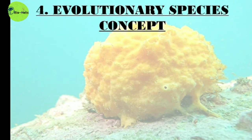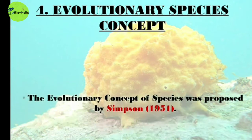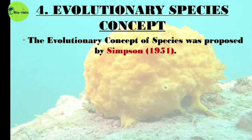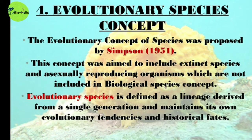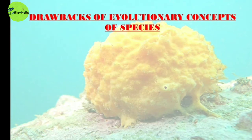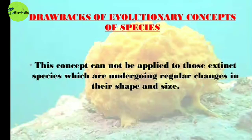The Evolutionary Species Concept was first proposed by Simpson in 1951. It was aimed to include extinct species and asexually reproducing organisms not covered by the Biological Species Concept. An evolutionary species is defined as a lineage derived from a single generation that maintains its own evolutionary tendencies and historical fates. The drawback is that it cannot be applied to extinct species undergoing regular changes in shape and size.